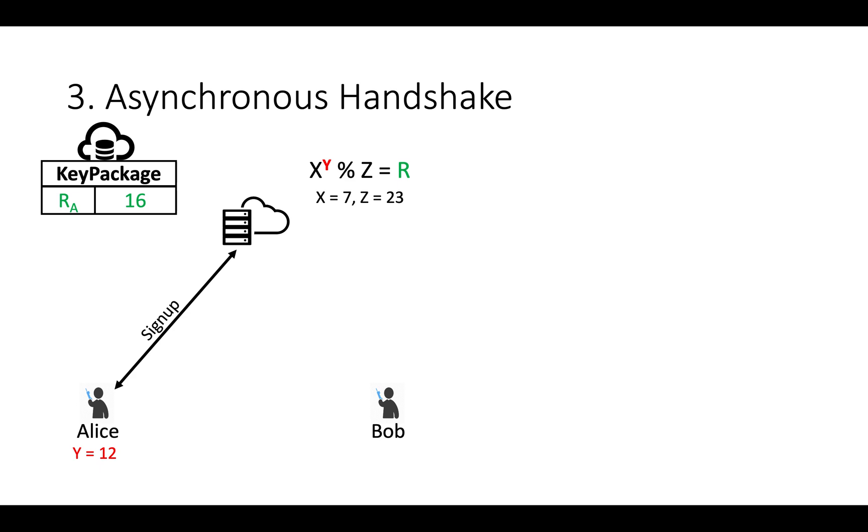We have another user Bob. Generate random secret, calculate public info and sign up with server. Again, public info is stored in DB.